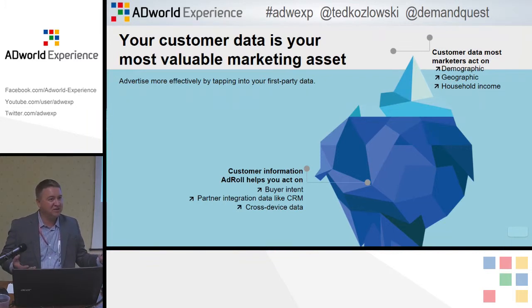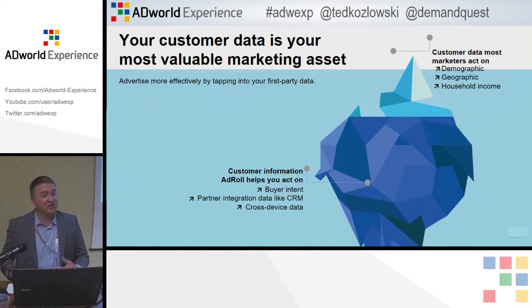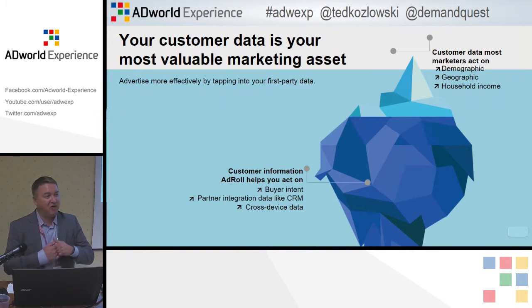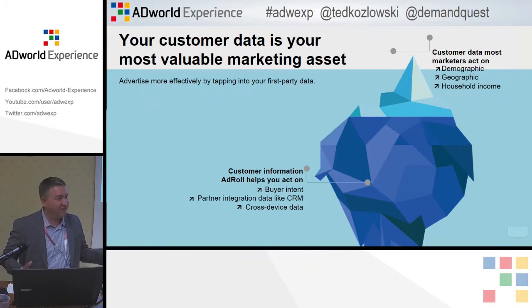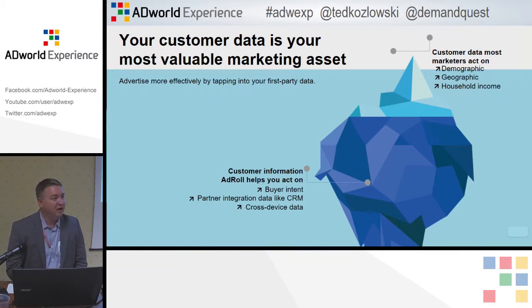Google will allow you to upload an email list and then it'll tell you how many they actually match. I've uploaded a list of 10,000 emails to create a remarketing audience, and they matched like 800 of 10,000 — a really, really small number — because the email list I had were all business accounts, and most people log into Gmail using their personal account. So it's a little challenging to get CRM data, email data, and social data into Google AdWords to create those targeted audiences.